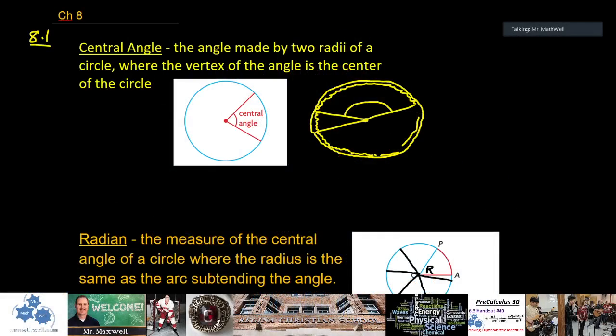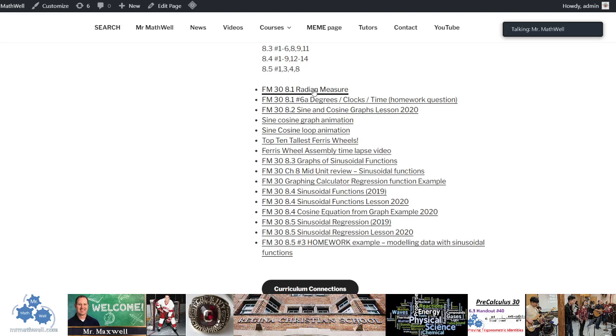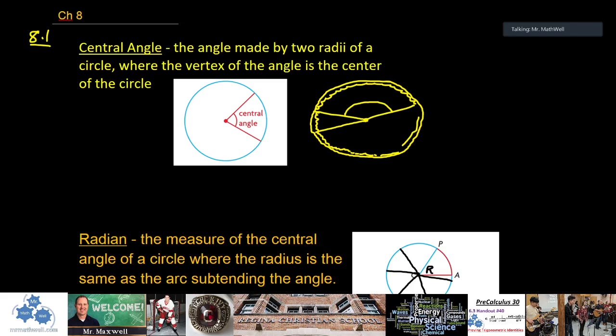All right, here we go. Chapter 8, Foundations of Math 30, Chapter 8 review. In Chapter 8 we talked about radians. Radians was the big deal and I spent way too much time probably trying to explain to you what radians are and why we need them. So if you want to go back and relive the torture that was the lesson on radians, please feel free to do that at mrmathwell.com. Here it is right here, radian measure. No other cheers from the classroom, okay good.